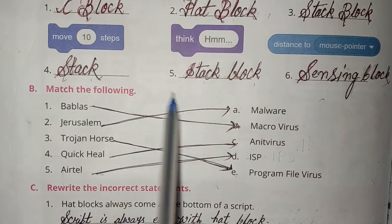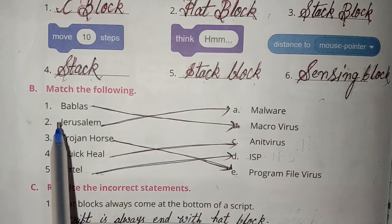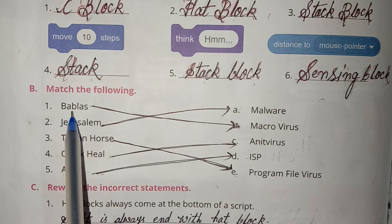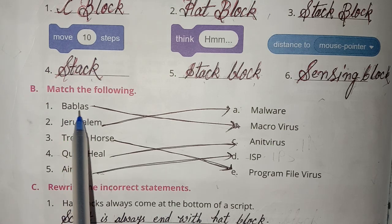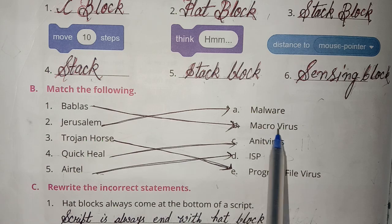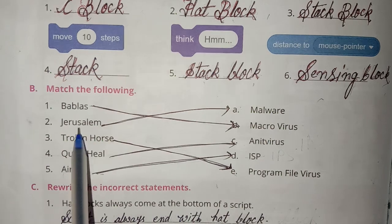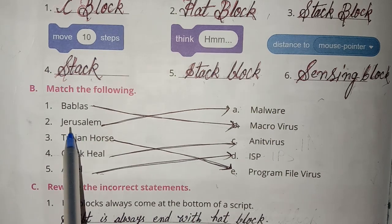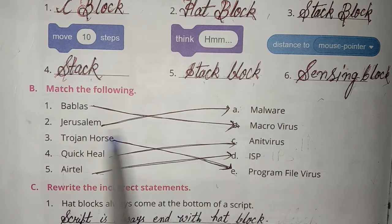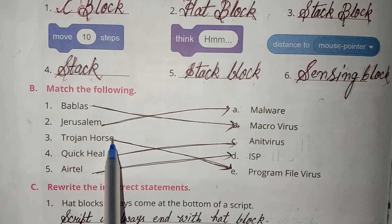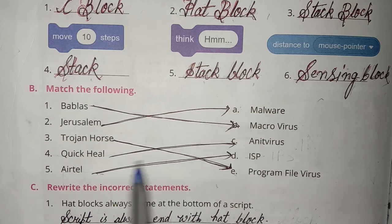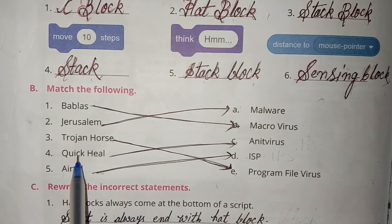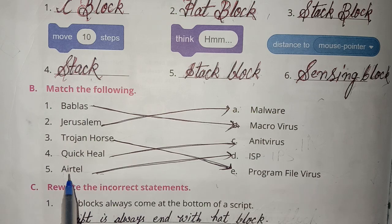Match the following: Babbles - Macro virus; Jerusalem - Malware; Trojan horse - Program file virus; Quick Heal - Antivirus; Airtail - Antivirus.